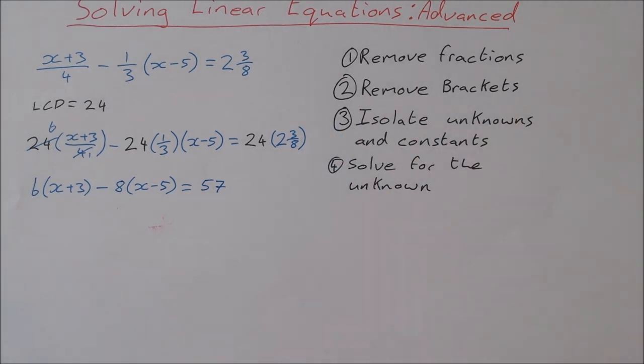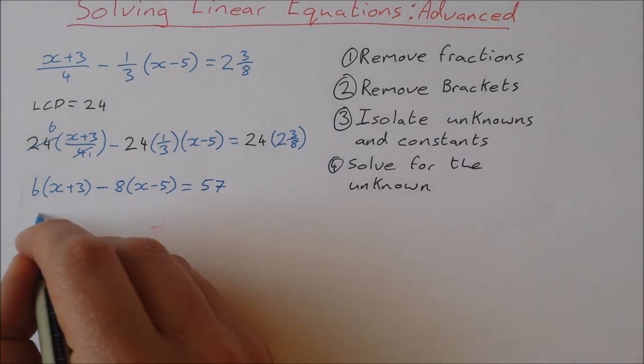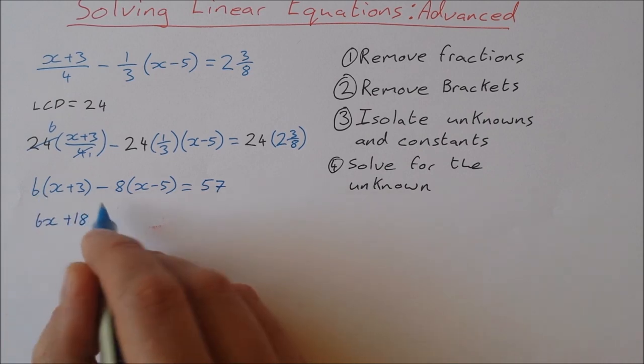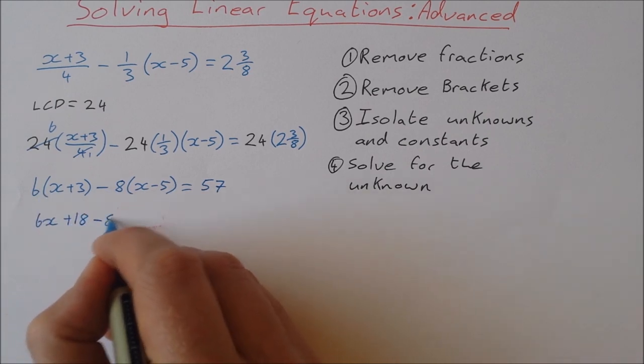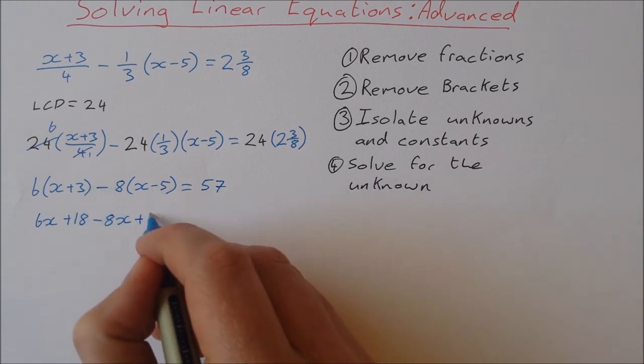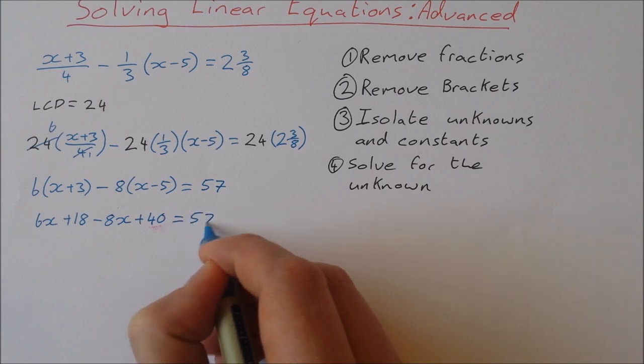Step 2: remove any brackets. So that's just multiplying these out. 6 by x is 6x, 6 by 3 is 18. Minus 8x, minus by minus is a plus, so that's plus 40 equals 57.